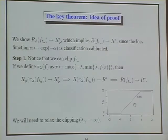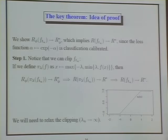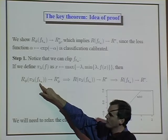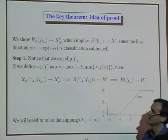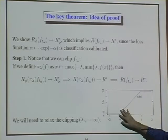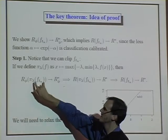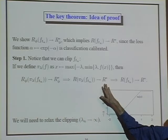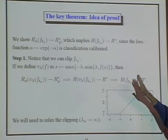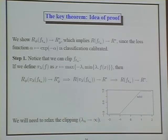Let me tell you quickly about the idea of the proof, and in particular how we get around the fact that Adaboost can take very large steps. One of the key ideas is to work with a clipped version of the functions. If this is the function we have after forming a combination of T basis functions, we consider not that function and its phi risk, but a clipped version — we clip it at some value and relax the clipping as the sample size grows. If the phi risk of the clipped version goes to the optimal value, this implies the risk goes to the optimal value.